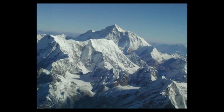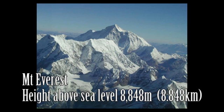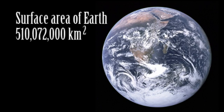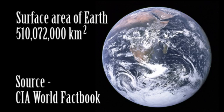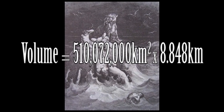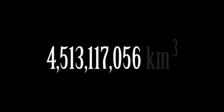Mount Everest is the tallest mountain on Earth and stands at 8,848 metres above sea level — that's 8.848 kilometres. Now, the surface of the Earth is calculated at 510,072,000 square kilometres. This includes the land and the oceans, and although that figure is probably not entirely accurate down to the last square metre, it is close enough for what we need. Volume equals area multiplied by depth, so 510,072,000 square kilometres multiplied by 8.848 kilometres gives us the volume of floodwaters required to cover the Earth higher than the highest peak — that's 4,513,117,056 cubic kilometres.